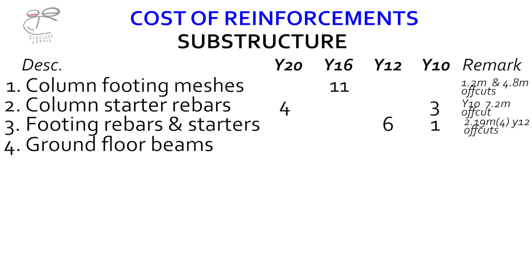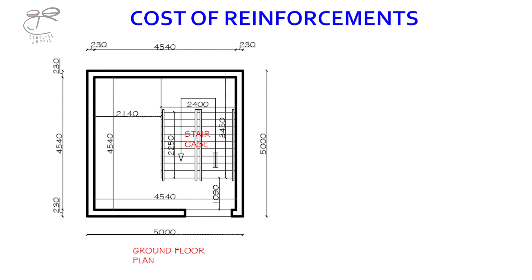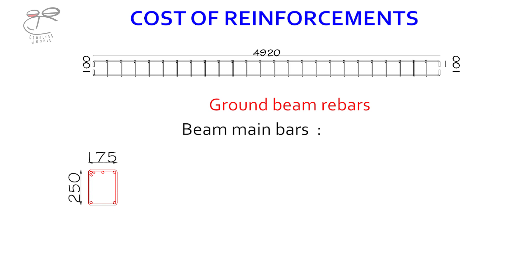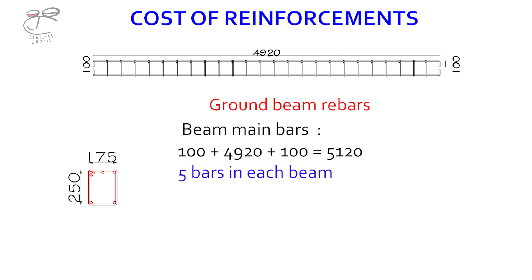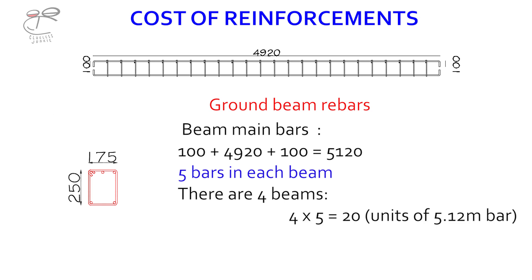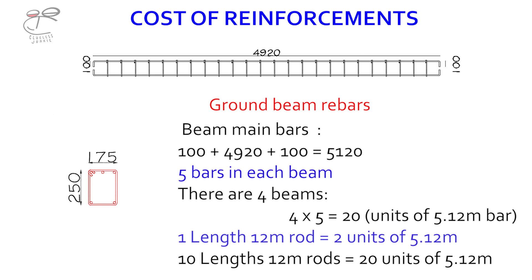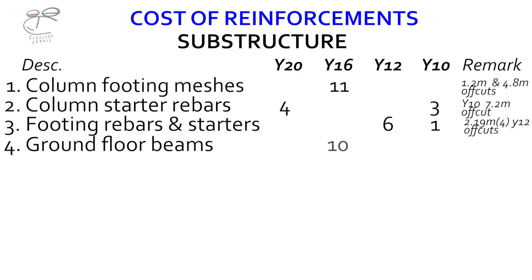Moving on to item four: ground floor beams. The floor plan shows the beams are the same length. We do the beam main bars — adding the values: 100mm anchorage plus 4.92 meters plus another anchorage gives 5.12 meters. There are five bars in each beam as shown clearly in the section. There are four beams, so four times five equals 20 units of 5.12-meter bar. One 12-meter rod gives two units of 5.12 meters with off-cuts, so 10 lengths of rod give us 20 units — we record 10 lengths of Y16 iron.